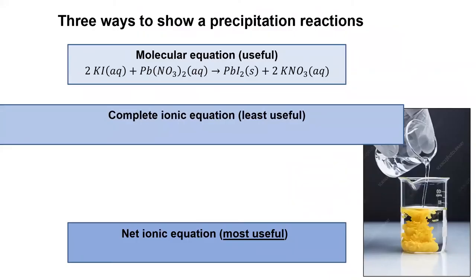There are three ways to write precipitation reactions, and you will need to be fluent in the first and the last. The way we've already seen them written is as a molecular equation, which shows a potassium iodide solution mixing with a lead two nitrate solution to form a lead two iodide solid and a potassium nitrate solution.